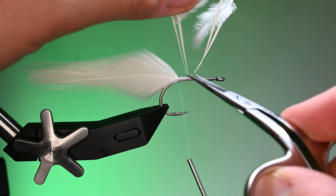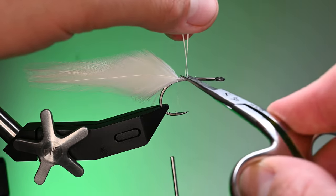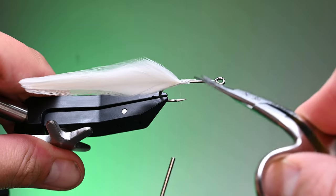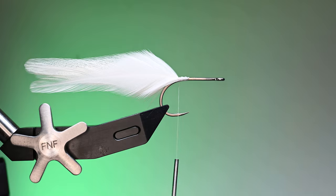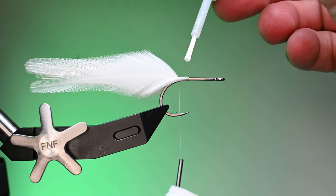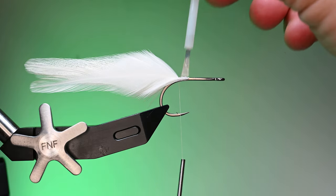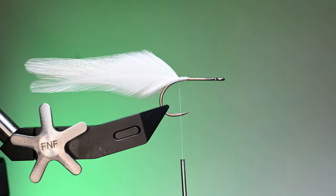They're curving into each other and so they're going to support—I believe the original DT special splayed the feathers, but most of the patterns I've seen have actually had them going towards each other. I'll put a little super glue on there just to bond that and make it a little bit more durable and we're going to apply a little bit of flash.